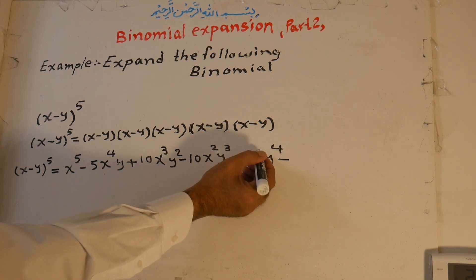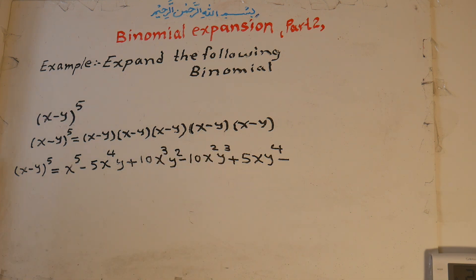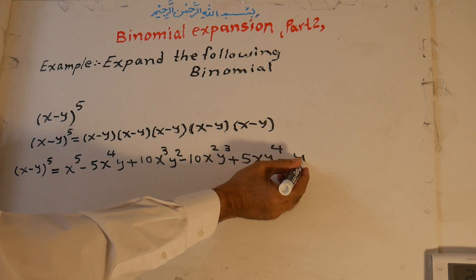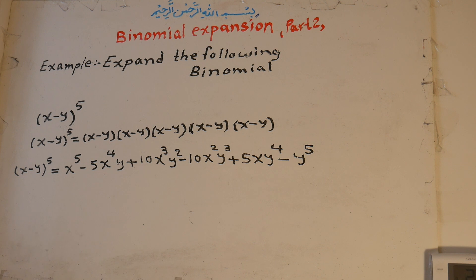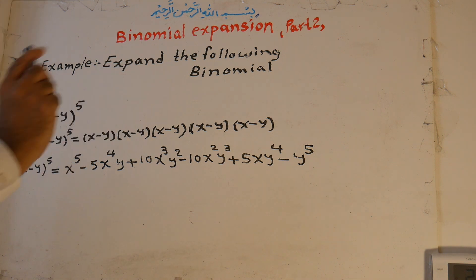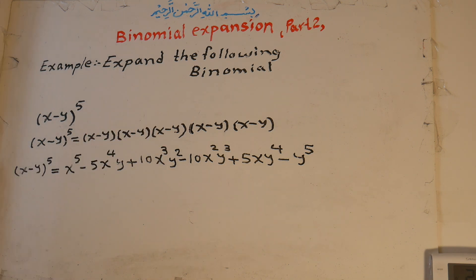Then positive: 2 times 10 is 20, divided by 4 (fourth term) is 5. So plus 5x to the power of 1, y to the power of 4. And for the last term, the power of x is 1, times 5 is 5, divided by 5 (fifth term) is 1. x to the power of 0 is 1, so the last term is minus y to the power of 5.